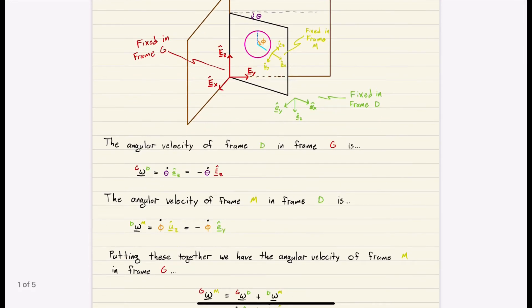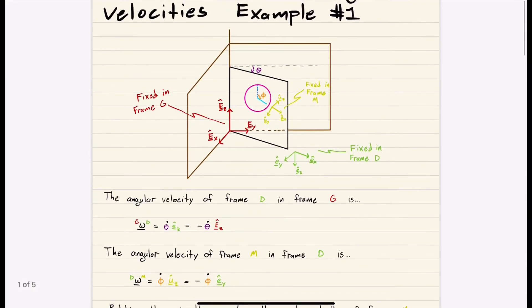Let's go on. So the angular velocity, let's find the angular velocity of frame M in frame D. So our minute hand in our door frame. Well, how does frame M rotate with respect to the green frame?